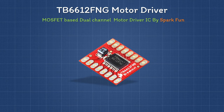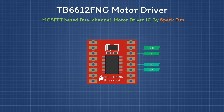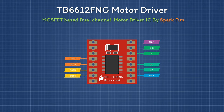This breakout board by SparkFun gives you direct access to all features of the TB6612FNG driver, and also adds power supply capacitors and reverse battery protection on the motor supply. All control inputs are on the right side of the breakout board, containing four direction pins along with two enable pins — enable pins support PWM input to control motor speed. On the left side there are four pins for motor outputs. Logic supply voltage ranges from 2.7 to 5.5 volts, while motor supply voltage is limited to a maximum of 15 volts.